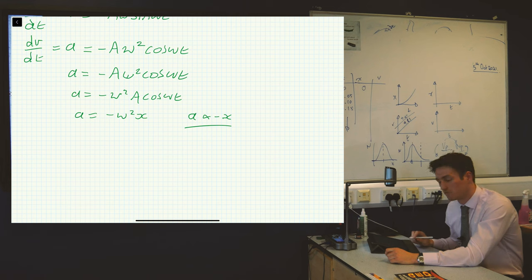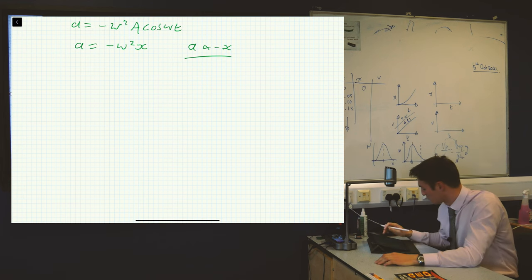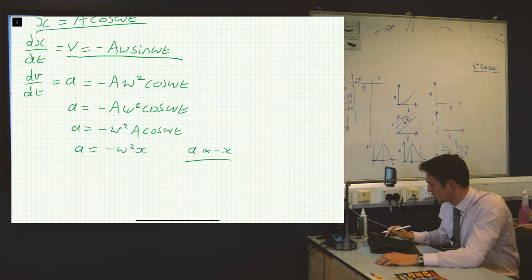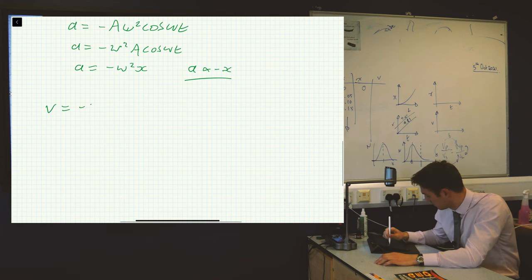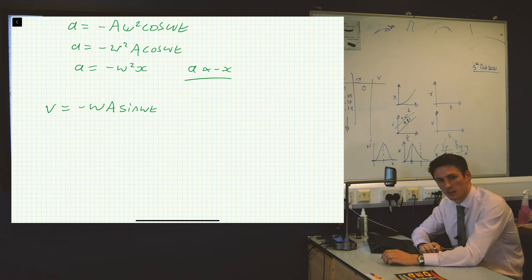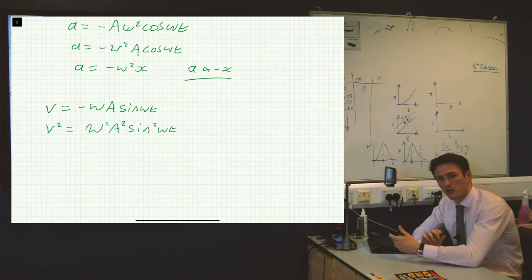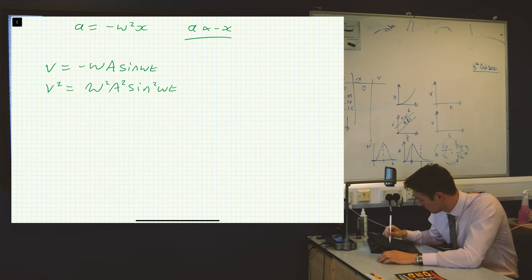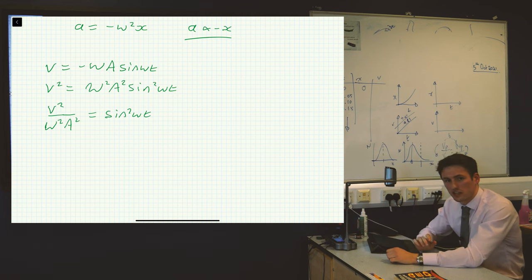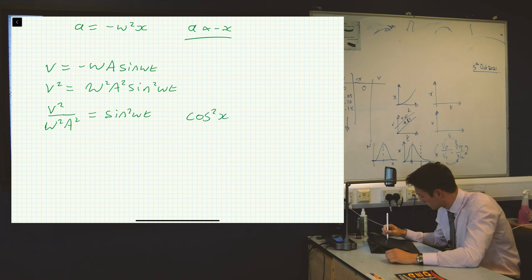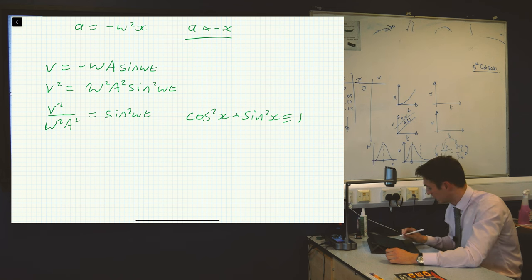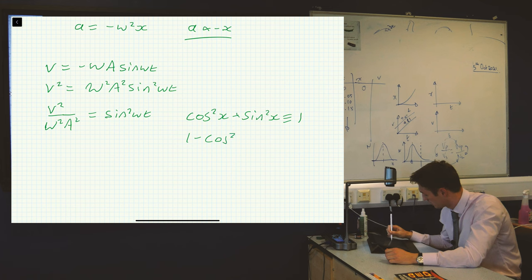Now we don't have to redo our calculation because we already have it. We know that v equals minus A omega sine omega t. So we'll start with that and square both sides. When we square, we lose the minus sign — two negative numbers multiplied together give a positive. We take out the omega squared and the A squared. Now we're going to use an identity: cosine squared x plus sine squared x equals one. So we substitute sine squared omega t for one minus cosine squared omega t.